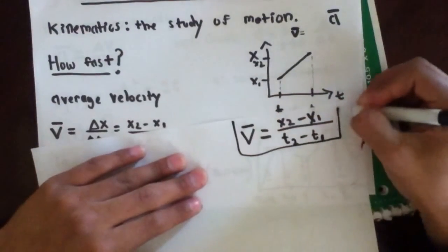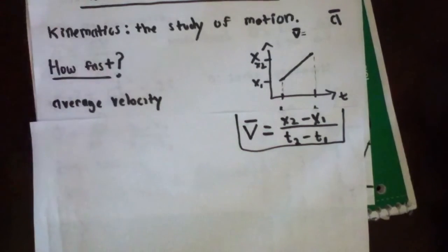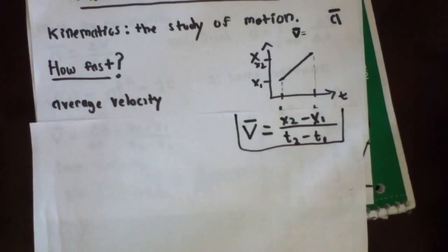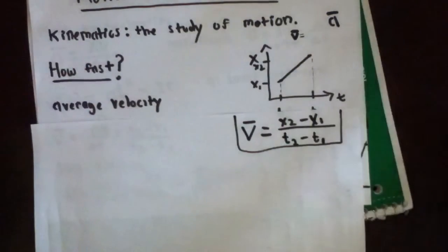Usually, when people ask how fast, you're expecting an answer to have units. Like, for example, the limit at the freeway is 65 miles per hour. And miles per hour is what is important. Without the units, it's meaningless, right?